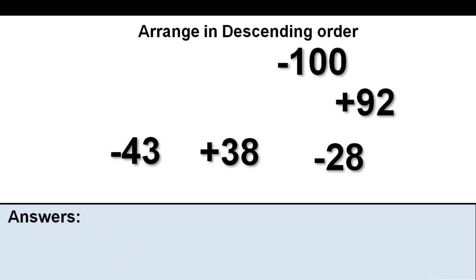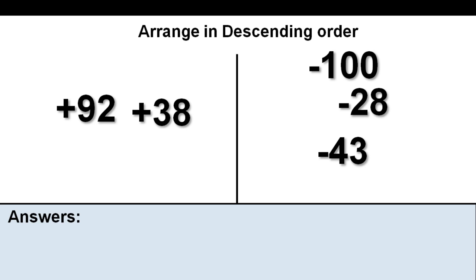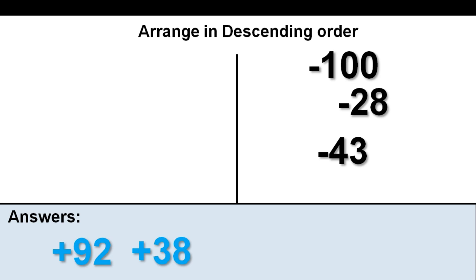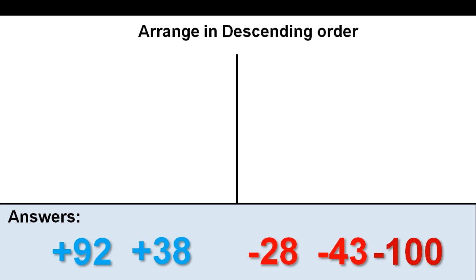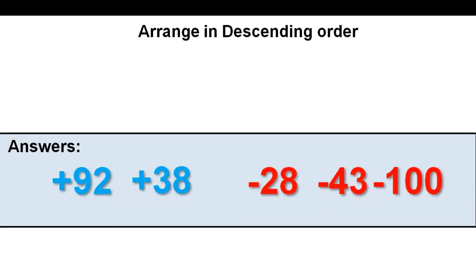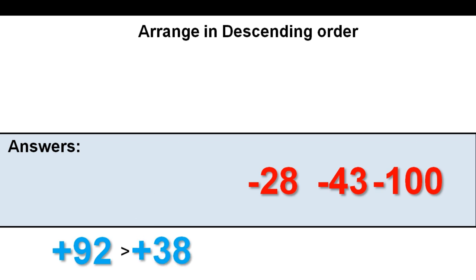Here are some more numbers that we are going to arrange in descending order. Again, we first split them into positive and negative. This time, we want the number furthest to the right on the number line first — the most positive number, which is positive 92. As we go down the number line, the next number we would reach is positive 38. As we go down past 0, we would start to get more negative. Negative 28 would come first, then negative 43, and finally negative 100. These numbers are now in descending order. Again, we can use inequalities between each number.